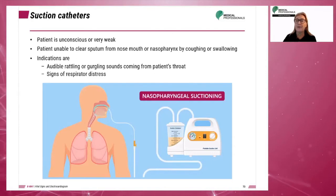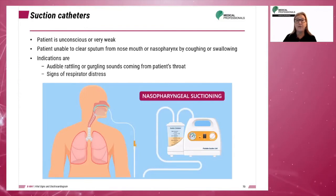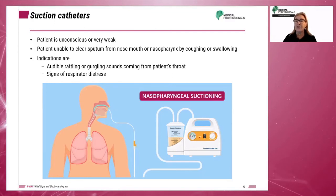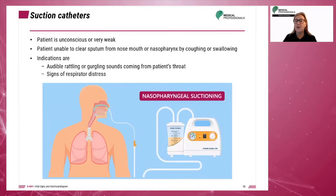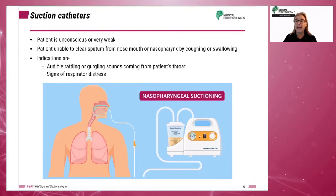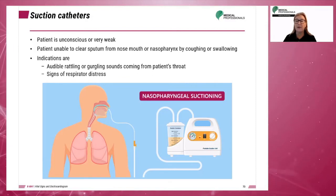A suction catheter is used to remove body secretions such as mucus and saliva from the upper respiratory system. The catheter is connected to a suction machine or a suction collection canister. Suction is used on patients who are unconscious or very weak and unable to expel mucus or clear sputum from their nose, mouth, or nasopharynx by coughing or swallowing. Indications for suctioning can include audible rattling or gurgling sounds coming from the patient's throat or other signs of respiratory distress.